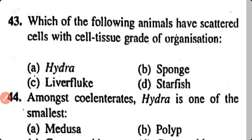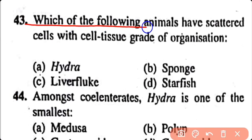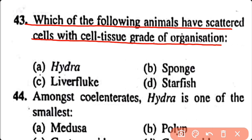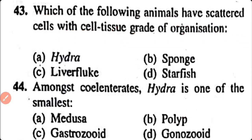Question number 43. Which of the following animals have scattered cells with cell tissue grade of organization? Hydra, sponge, liverfluke, starfish. Option A. Hydra has cell tissue grade of organization.